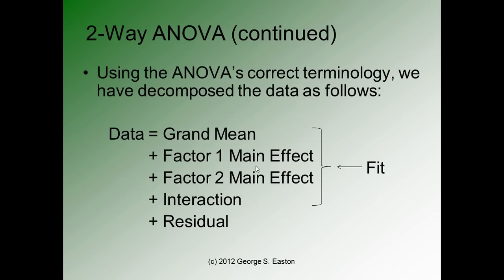The terminology I just used is not the correct or typical terminology associated with ANOVA, so let me restate it using analysis of variance's usual terminology. The data is decomposed into a fit plus a residual, and the fit consists of a grand mean, plus the factor one main effect, plus the factor two main effect, plus an interaction between factor one and factor two.